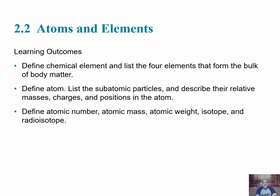Section two covers atoms and elements. Learning objectives include: define chemical element and list four elements that form the bulk of body matter; define atom and list subatomic particles describing their relative mass, charges, and positions; and define atomic number, atomic mass, atomic weight, isotope, and radioisotope.